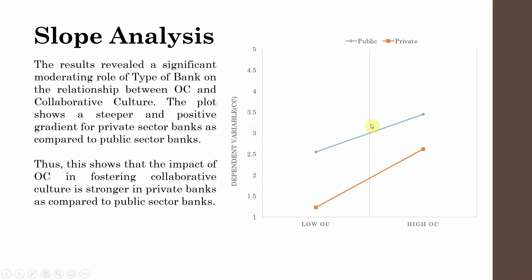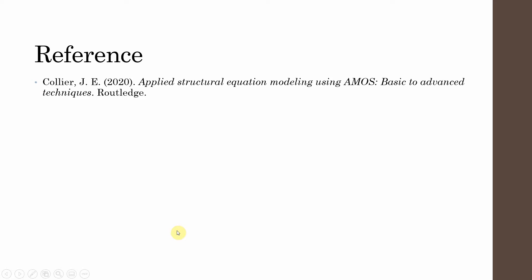The reason is this is much more of a straight line for public banks — so although you are changing organizational commitment, the change in collaborative culture is not that much. But for private sector banks, at low OC the collaborative culture is much lower; however, with the change in organizational commitment there is a steeper change in collaborative culture. This means in private sector banks the relationship between OC and CC is much stronger compared to public sector banks. If you want to know more about moderation and other techniques in AMOS, this is a very good read.